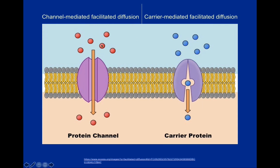Channel proteins differ from carrier proteins in that channel proteins actually form a pore that allows substances to move through the membrane very, very quickly. You will constantly discuss different types of channels and carriers throughout Anatomy and Physiology. Channel proteins generally allow substances to move through them much faster because the pore is generally left open. As for carrier proteins, they will undergo what's known as a conformational change — a shape change — which allows them to allow certain substances in and then change their shape to allow certain substances out.